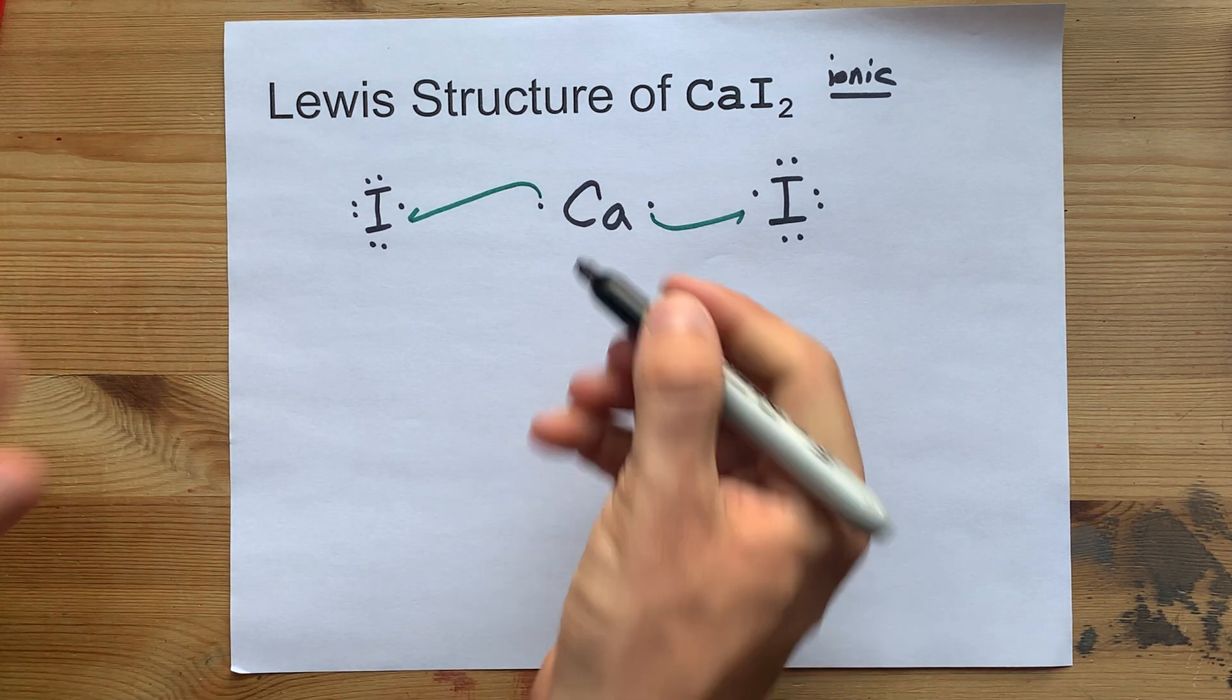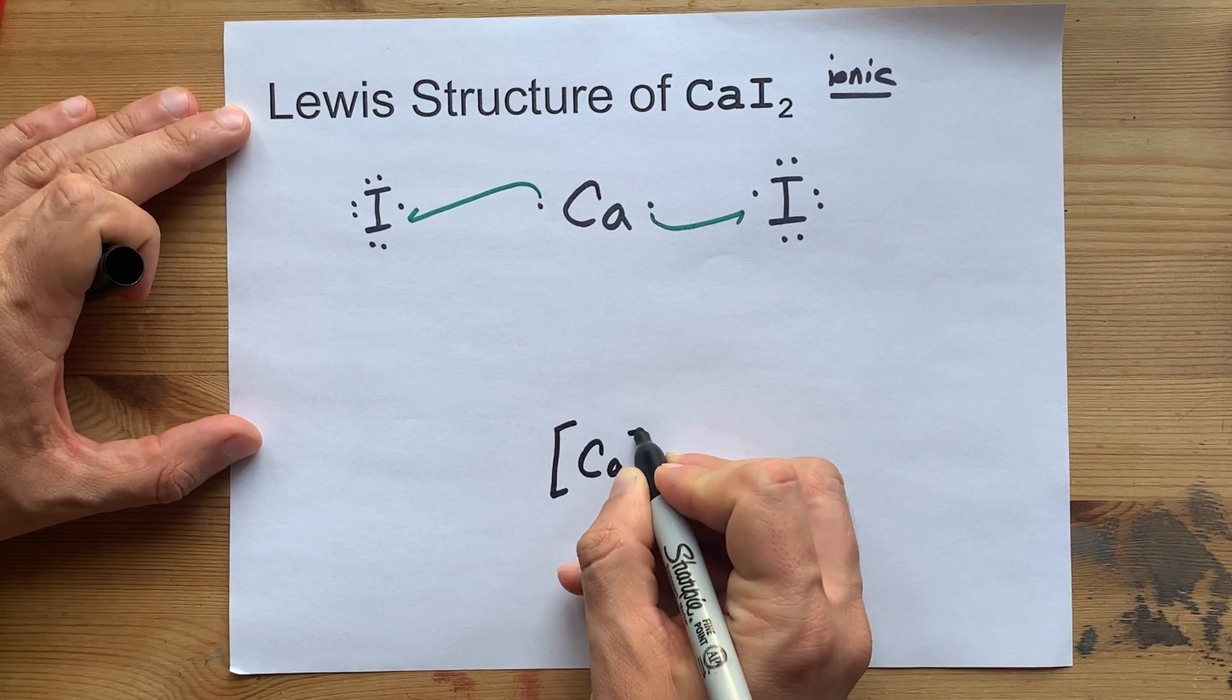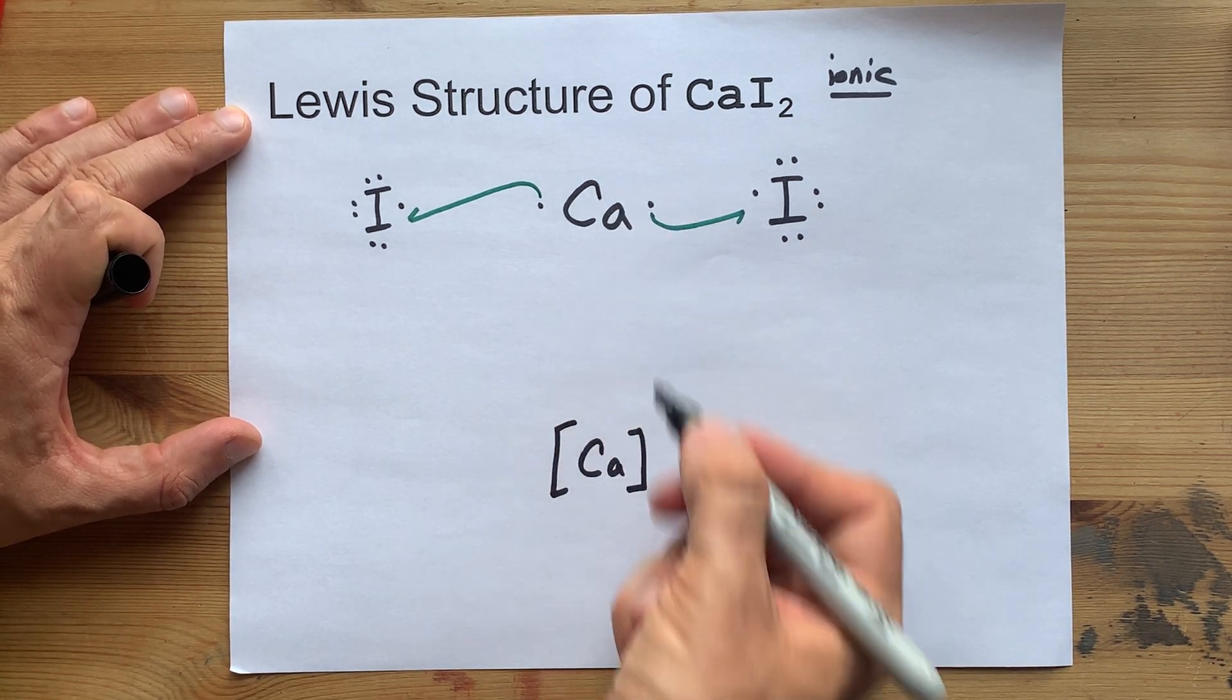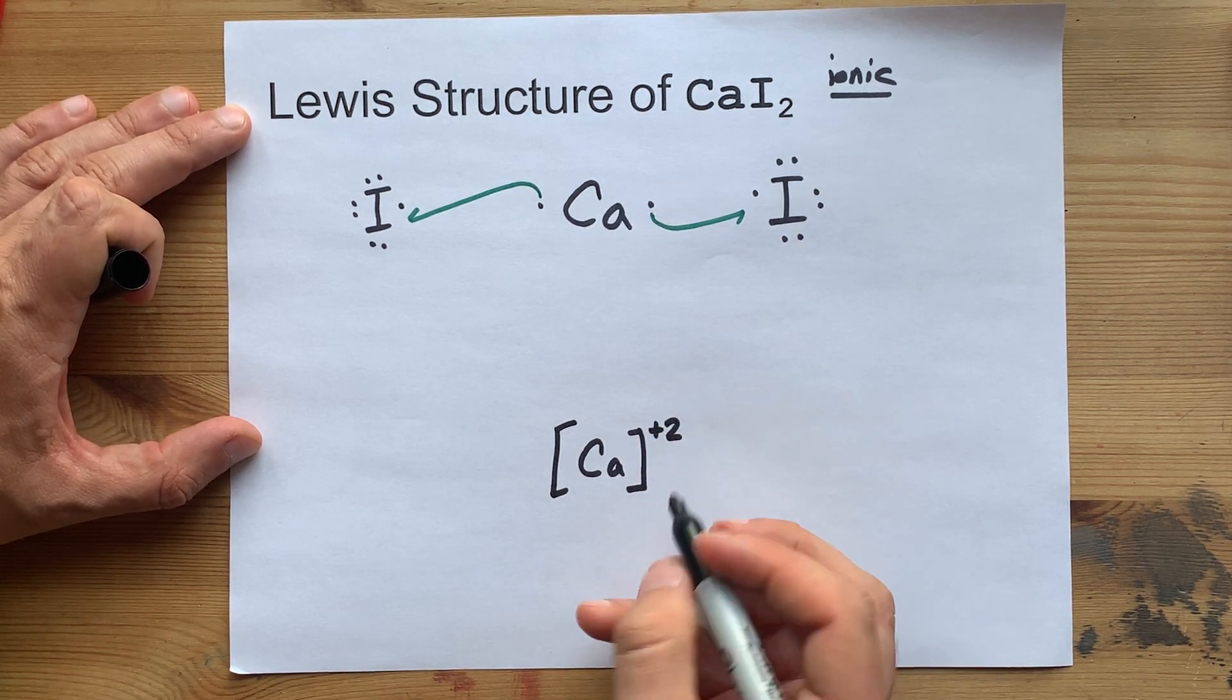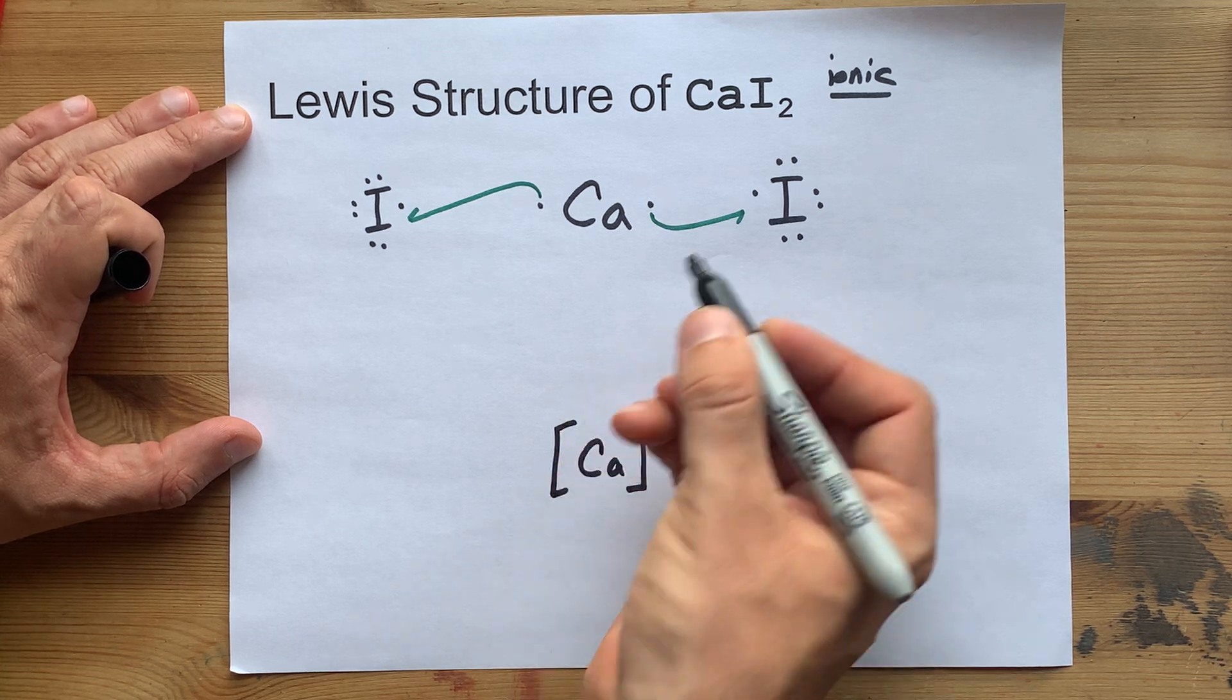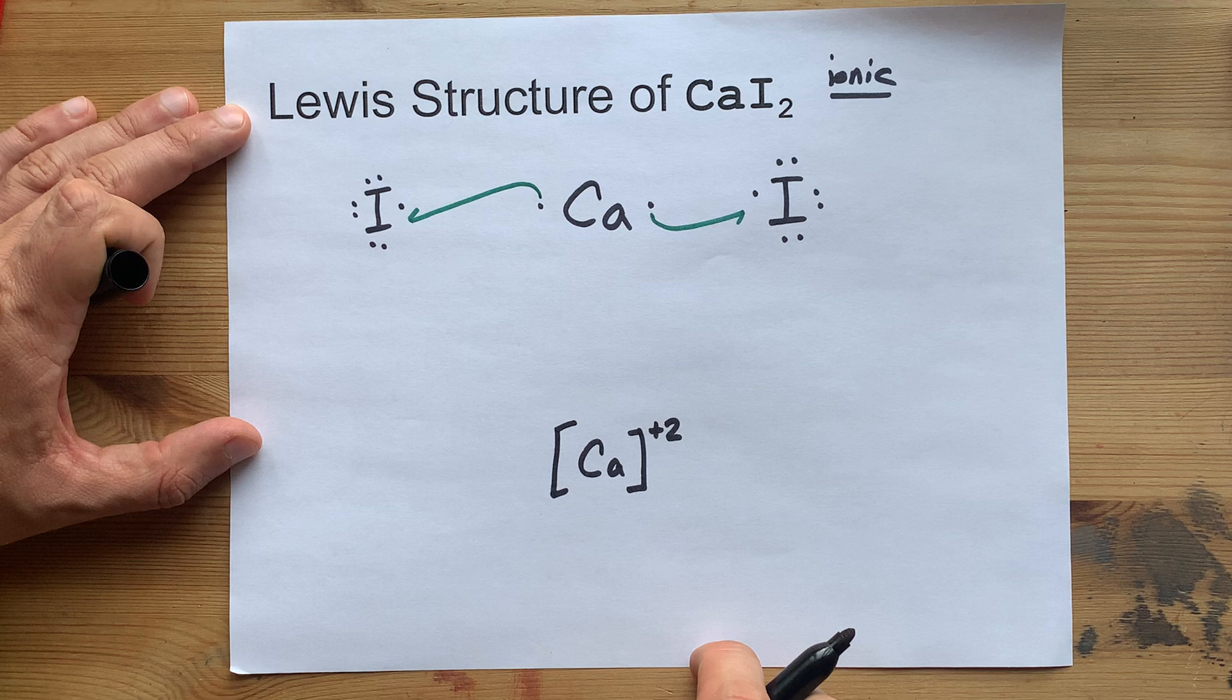Your final structure is going to have that calcium atom with no electrons around it. After all, it gave them away. And because it lost electrons, it's got a plus two charge. Charged particles in a Lewis structure get square brackets with the charge written in the top right corner.